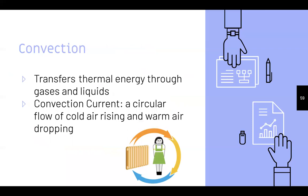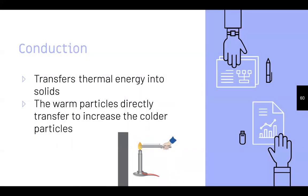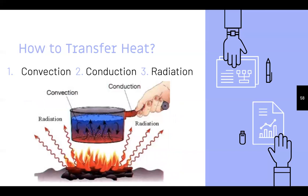Convection transfers thermal energy through gases and liquids. A convection current is that circular flow of cold air rising and warm air dropping. In the picture, cold water transfers to the bottom heated water — you can see that little current traveling in a circular motion. The bottom is more heated, that warm water starts going up, and the cold water starts going down as they mix.